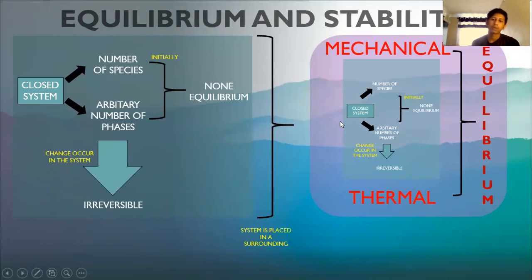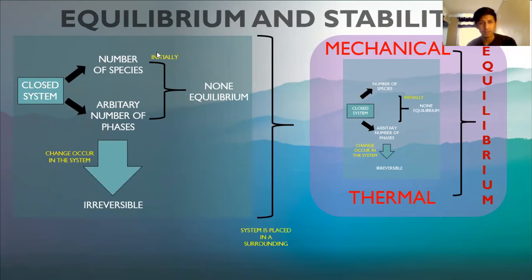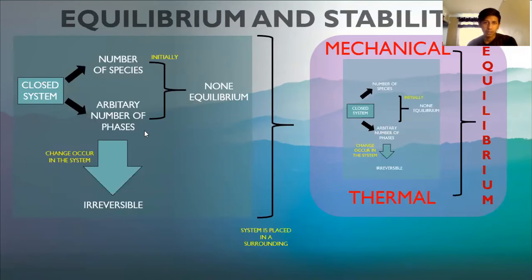Assalamualaikum warahmatullahi wabarakatuh. I am from Group 3 and I will explain equilibrium and stability, covering the first part. Consider a closed system containing a number of species and an arbitrary number of phases that are initially in non-equilibrium with respect to mass transfer between phases and chemical reaction. The changes which occur in this system are necessarily irreversible and take the system ever closer to an equilibrium state.